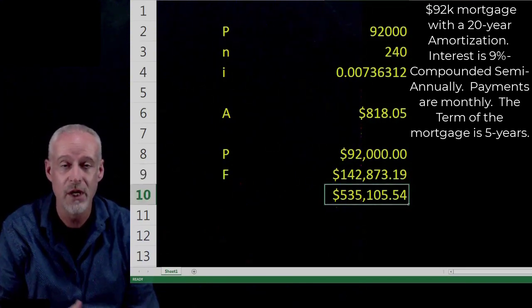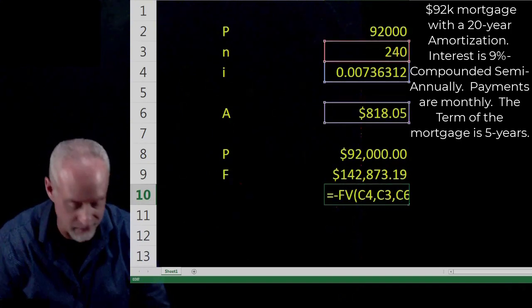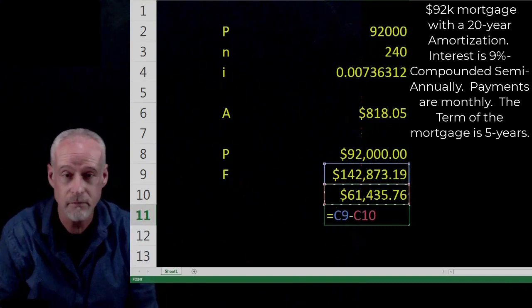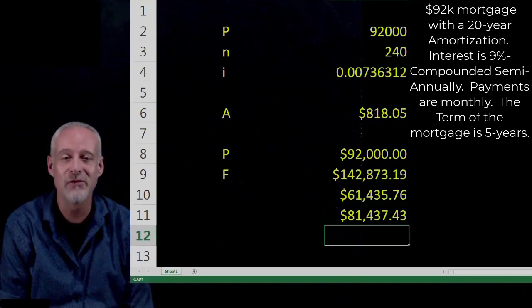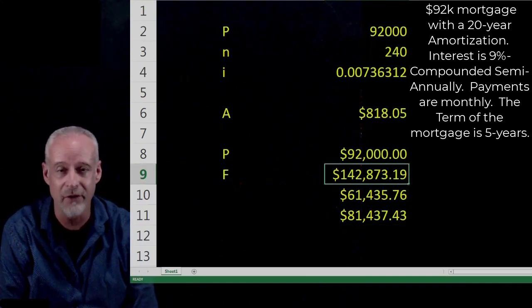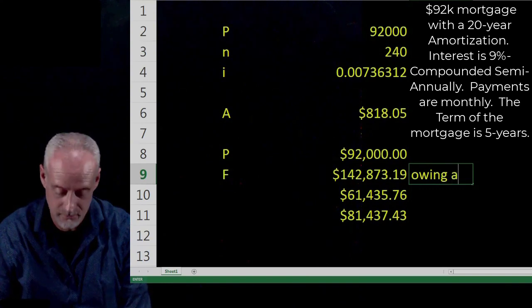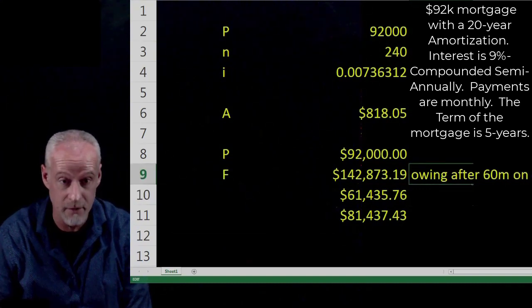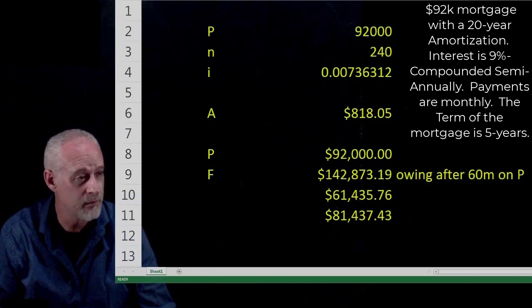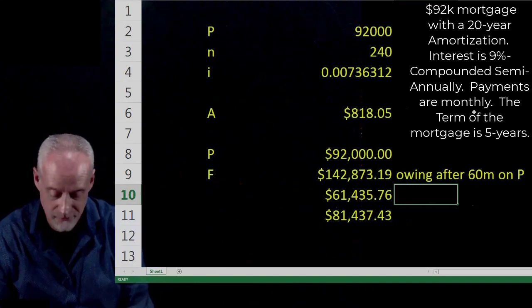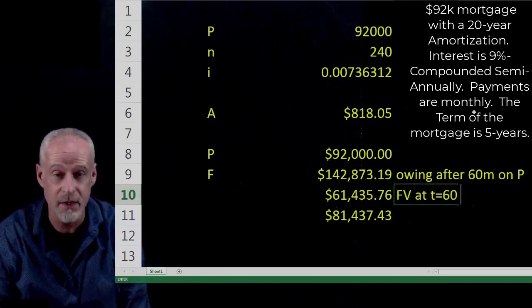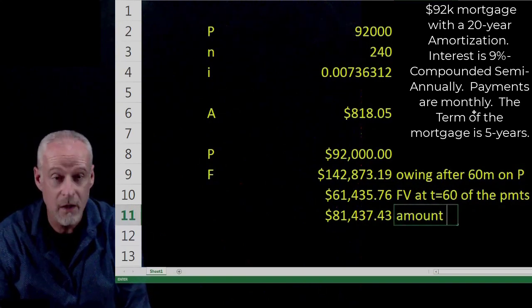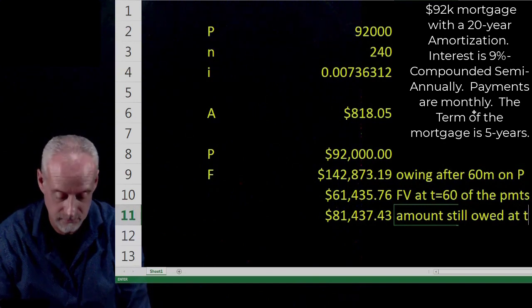And then if we say, what's the future value of 60 payments, so I can find the future value of 60 payments in here, that's $61,000. And then I can just subtract these two, so the amount owing at the end of the five-year term would be $81,437. I'll put here, owing after 60 months, and this is on the value of P. And then here, we could say that this is the future value at T equal to 60 of the payments. And then subtracting the two, this is the amount still owed at T equal to 60.